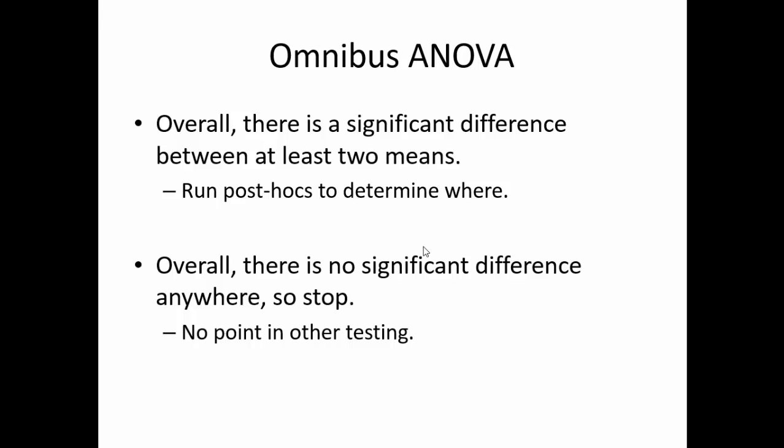Sticking with the ANOVA, we will begin by running the omnibus ANOVA. An omnibus test is one that tests for a significant difference in the experiment between at least two means, but it doesn't tell you between which two means it is. By running this first, we can assess if running other tests will even be worth our time. If the ANOVA turns out to be non-significant, then there is no significant difference between any of the means. So running other tests would also show that there is no difference.